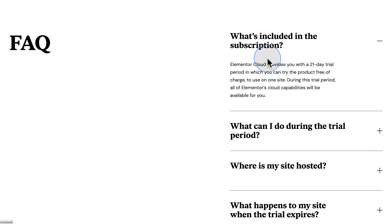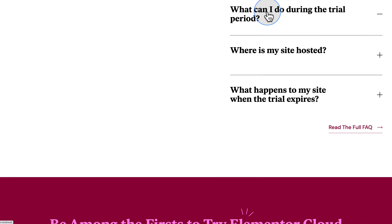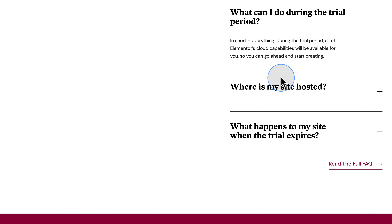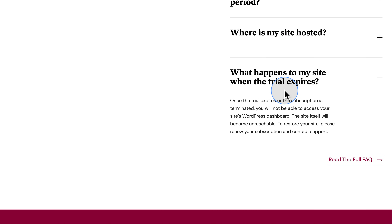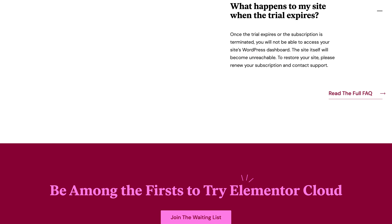Then we get into the FAQs. We covered most of these, except for the trial period — there's a 21-day trial period, though since it's not even released yet, that might change. During the trial, you get the full feature set — everything you want to do. The site is hosted by Elementor. And what happens when the trial expires? It's terminated. You can read the full FAQ by clicking the link provided.